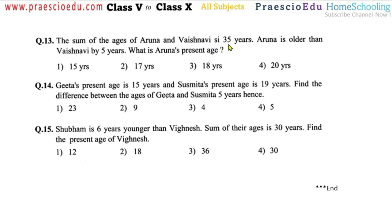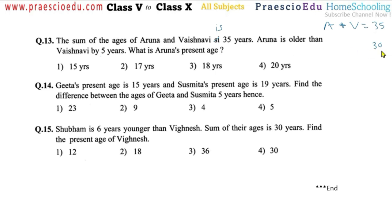Question number thirteen: the sum of ages of Aruna and Vaibhavi is 35 years. Aruna is older than Vaibhavi by five years — what is Aruna's present age? First subtract 5 from 35, giving 30. Divide by 2, so 15 — that is Vaibhavi's age. Then 15 plus 5 equals 20 — that is Aruna's age. So option number four is correct.